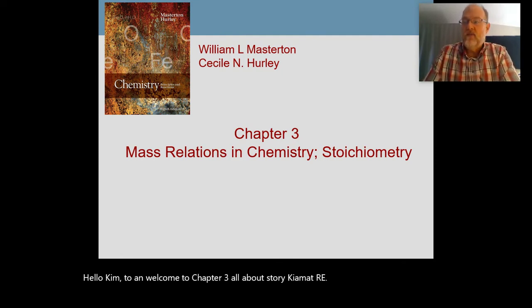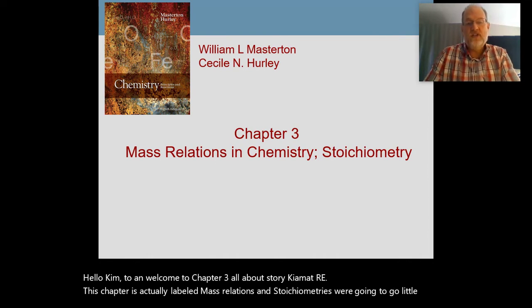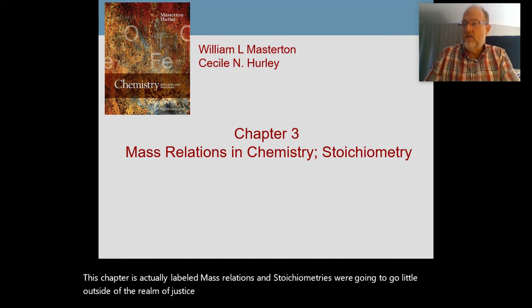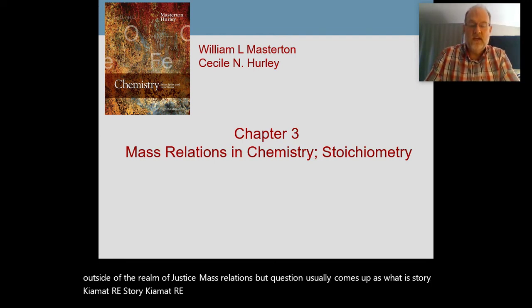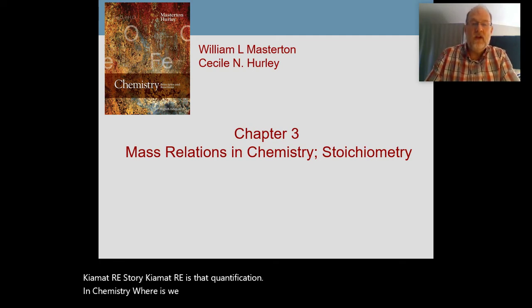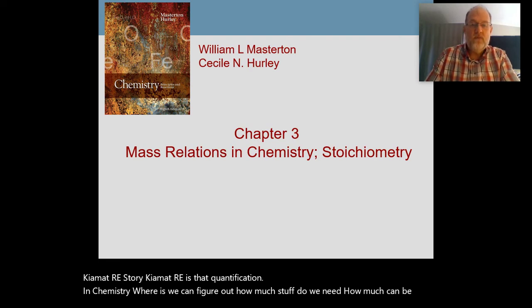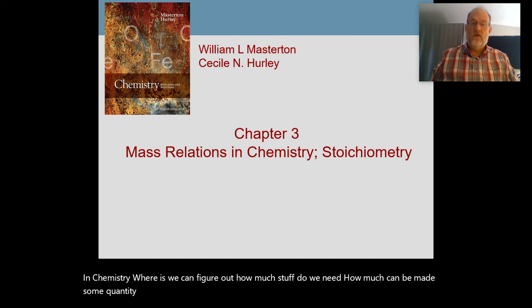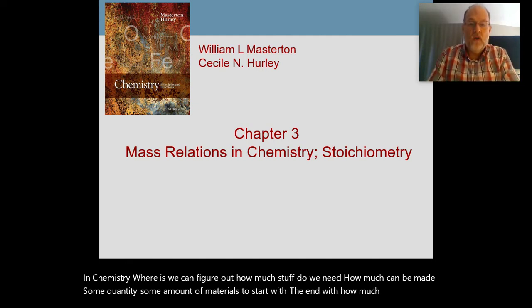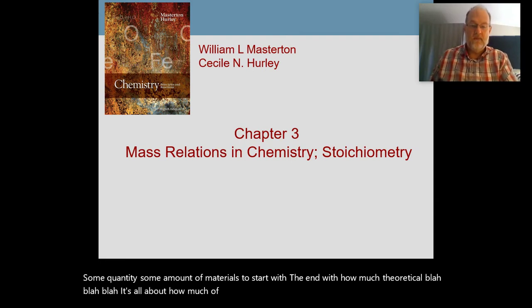This chapter is actually labeled Mass Relations and Stoichiometry, though we're going to go a little outside of just mass relations. Stoichiometry is that quantification in chemistry — where we can figure out how much stuff we need and how much can be made. We need some quantity, some amount of materials to start with, to end with, how much theoretical yield, and so on. It's all about how much of the materials during a chemical reaction. That's what stoichiometry is.